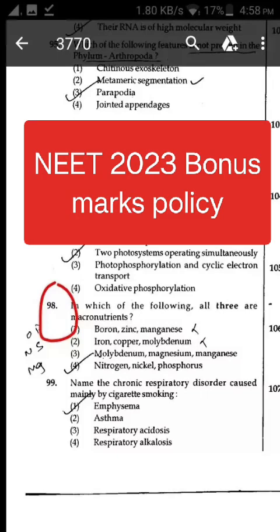NEET 2023 bonus marks policy for Section A: to answer a question, candidates need to choose one option corresponding to the correct answer or the most appropriate answer. However, if any anomaly or discrepancy is found after the process of challenges of the key verification, it shall be addressed as follows: correct answer or most appropriate answer receives four marks (+4); any incorrect option marked will be given minus one mark (-1).